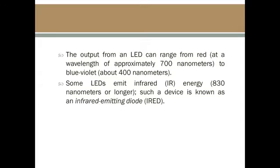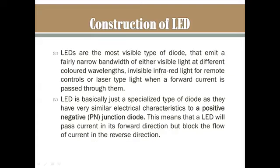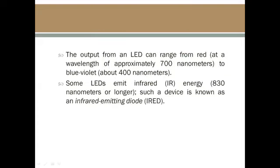Some LEDs emit infrared light — not just red or in the visible range, but infrared which is invisible. We cannot see its color at all. Its wavelength is approximately 830 nanometers. These devices are called infrared-emitting diodes, not light-emitting diodes. Light-emitting diodes refer specifically to visible light in the 400–700 nm range. Those emitting infrared light are called infrared-emitting diodes.